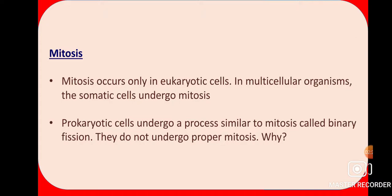The reason mitosis occurs only in eukaryotic cells is that in eukaryotic cells, the nuclear portion is definite — due to the presence of a nuclear membrane — and the nuclear material is also properly assembled. In multicellular organisms like humans, it is the somatic cells — the body cells — in which mitosis occurs.